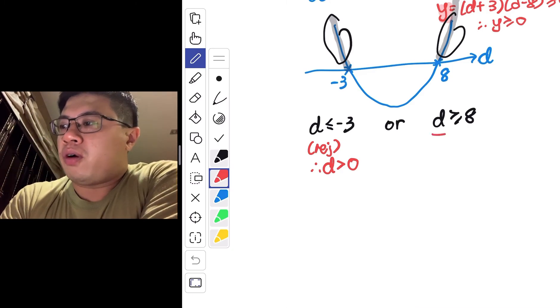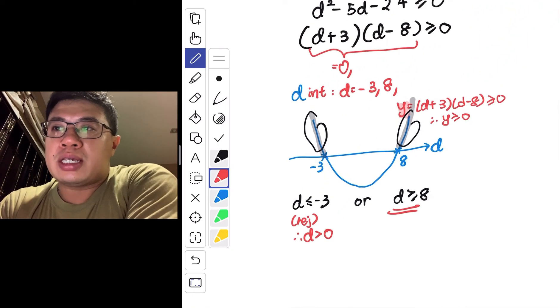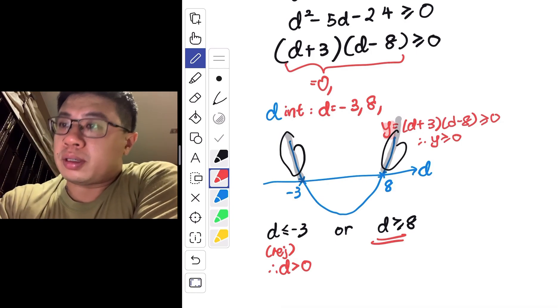So therefore, the least number of days is equal to 8. Thank you.